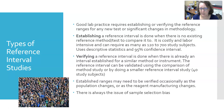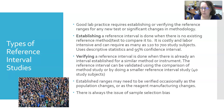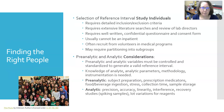The reference interval can be validated using a comparison method study or by doing a smaller reference interval study — you need at least 40 study subjects. If you don't remember the comparison of methods study, go back to the basic statistics video in the quality series. Established ranges may need to be verified occasionally as a population changes or as reagent manufacturing changes. There's also always the issue of sample selection bias — the people you recruit may not represent the actual general healthy population.